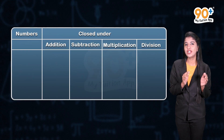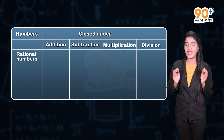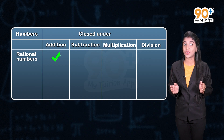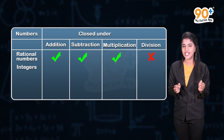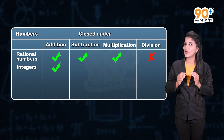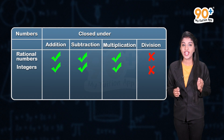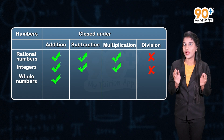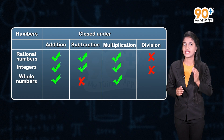Now let us form a table using these results. For rational numbers: they are closed under addition, subtraction, and multiplication, but not closed under division. For integers: they are closed under addition, subtraction, and multiplication, but not closed under division. For whole numbers: they are closed under addition and multiplication, but not closed under subtraction and division.